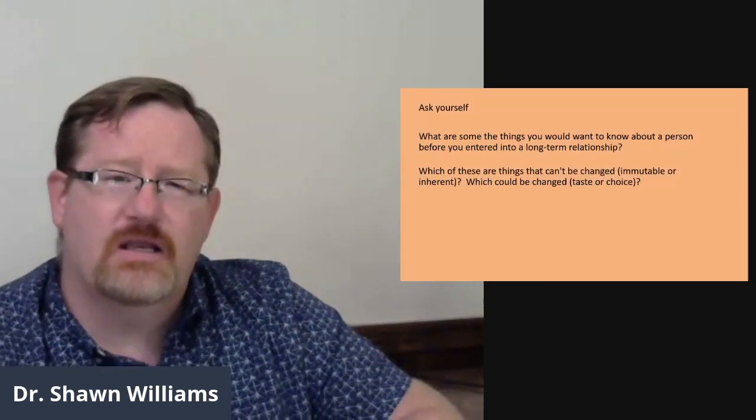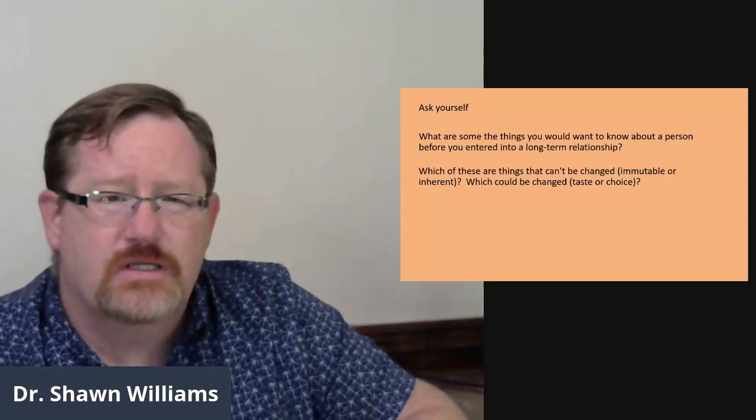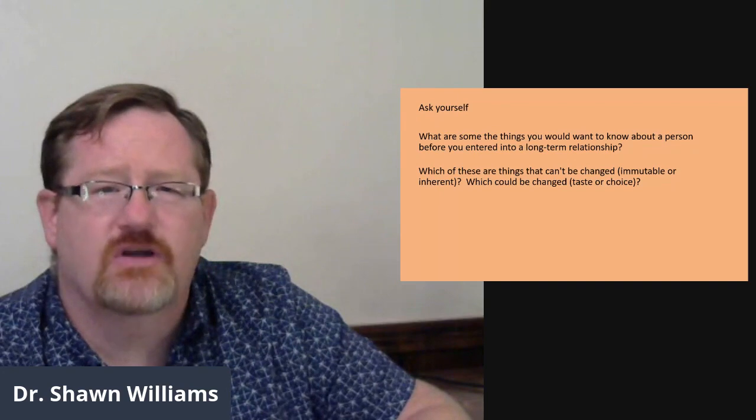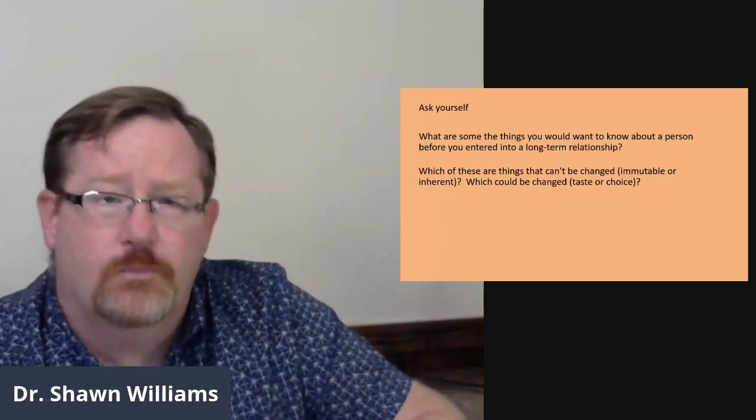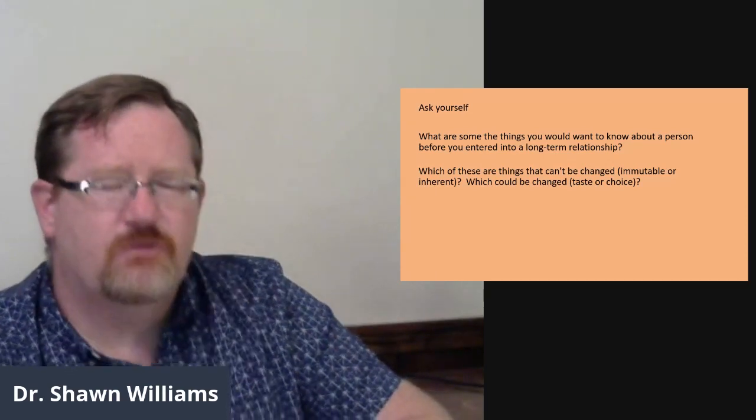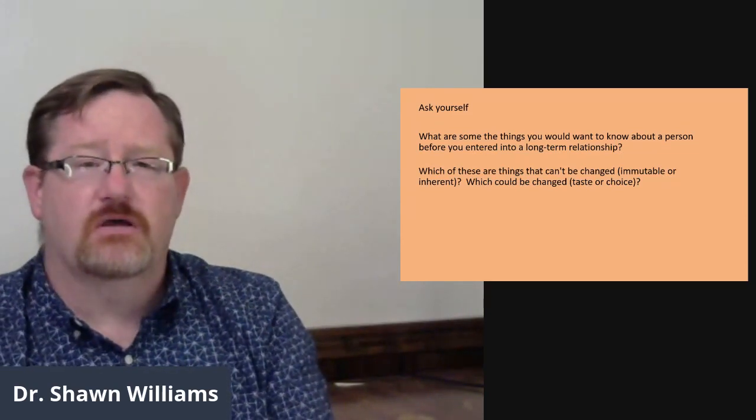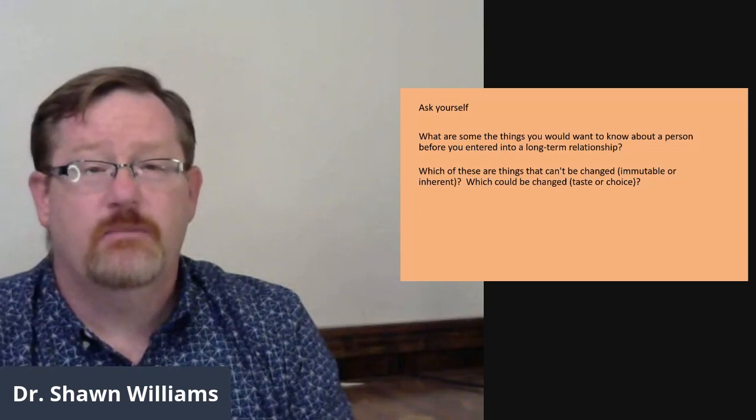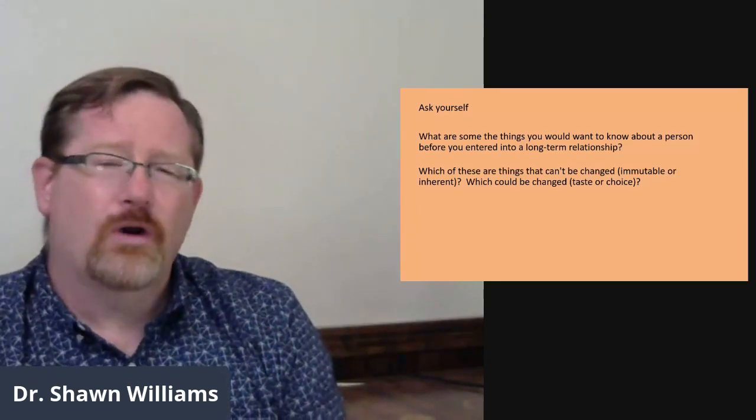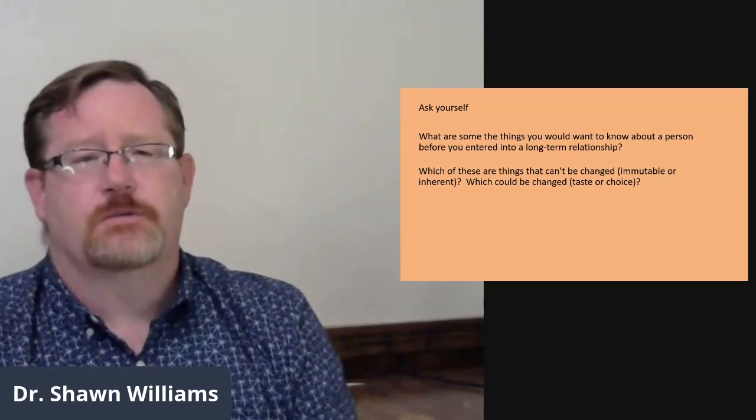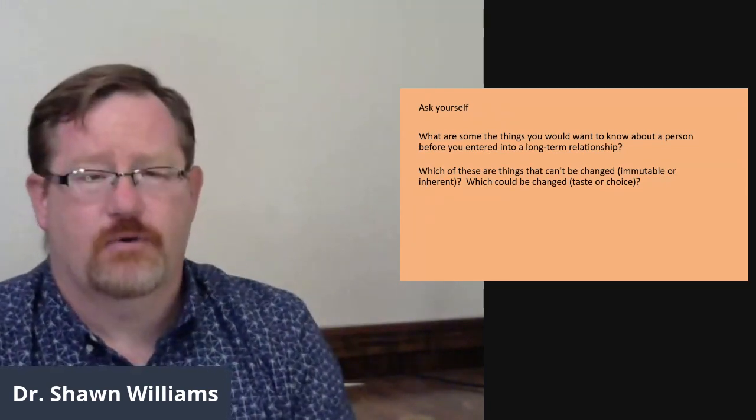As we're getting started, and at any time please feel free to pause the video, including after these questions. It's probably helpful to ask yourself a couple of questions to help you understand a little bit about what your own political identity or political ideology might be. If you were thinking about entering into a long-term relationship with somebody, maybe it's a future spouse or a partner, or maybe it's just simply someone you're going to be working with in a long-term relationship, what are the kinds of things that you would want to know about that person? What are the characteristics, the things that might help to shape you in your relationship with that person?